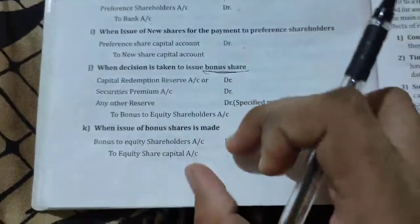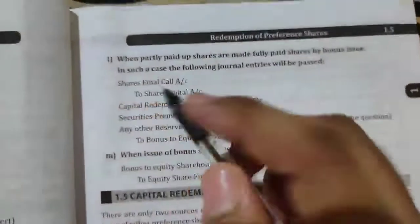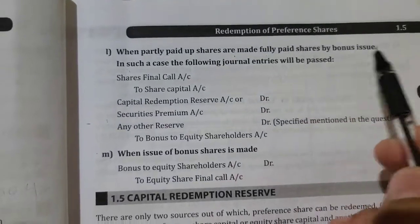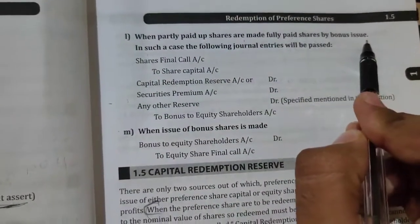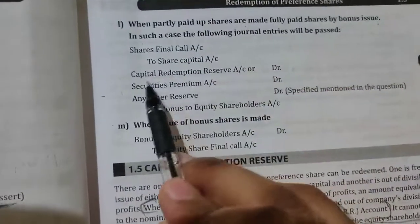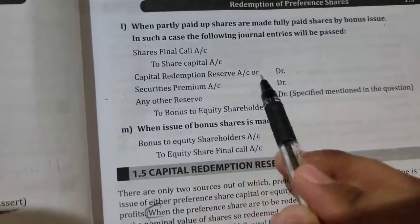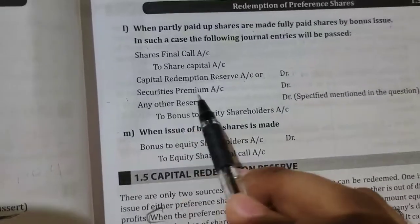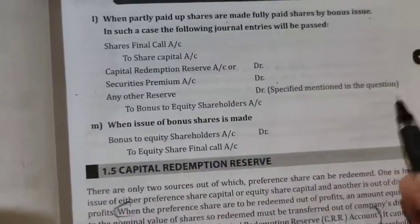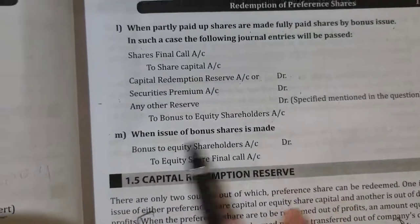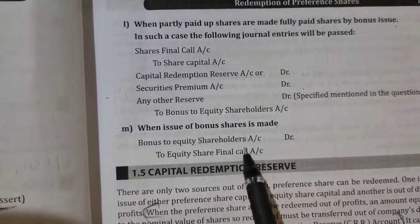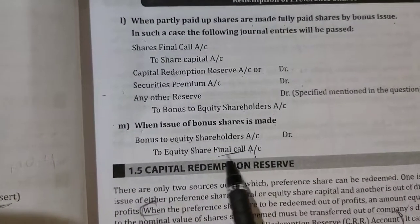When partly paid-up shares are made fully paid-up by bonus issue, the entry is: Capital Redemption Reserve Account Dr., Securities Premium Account Dr., any other reserve specified in the question Dr., to Bonus Equity Share Account. When the issue of bonus shares is made, the same entry applies here — we are just adding the final call entry as well.